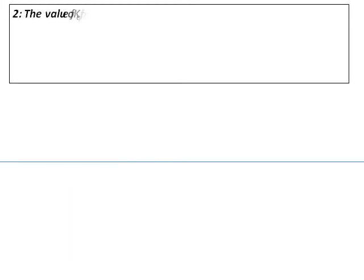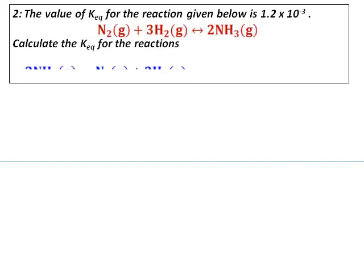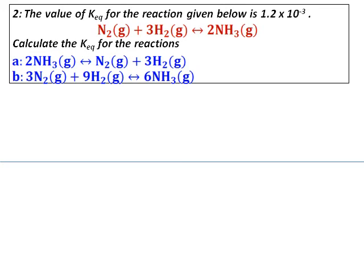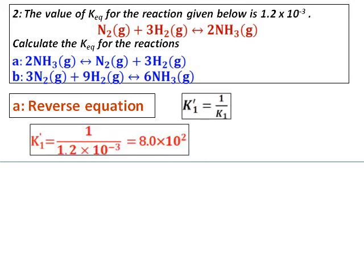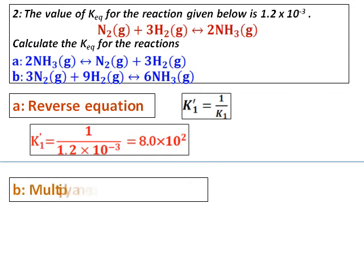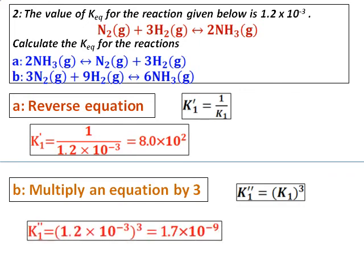We will do a question on manipulation of K. The K equilibrium for the given reaction is 1.2 × 10⁻³. Calculate K equilibrium for two modified reactions. For part A, the equation is just the reverse of the original, so K1-dash equals 1 over 1.2 × 10⁻³, which gives 8.0 × 10². For part B, the original equation is multiplied by 3, so K1-double-dash equals K1 raised to the power of 3, giving 1.7 × 10⁻⁹.